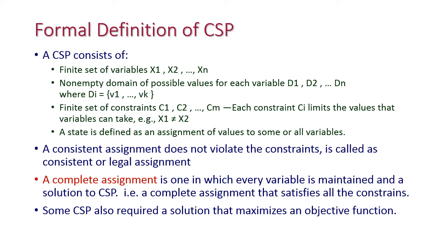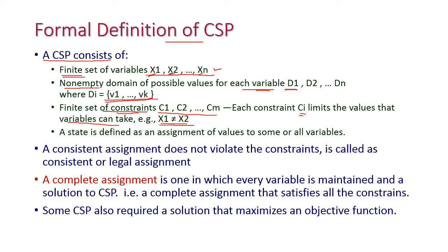The formal definition of CSP: a CSP consists of a finite set of variables X1, X2, up to Xn. Second, a non-empty domain of possible values for each variable — each domain consists of a set of values V1, V2, up to Vk. Third, a finite set of constraints C1 to Cm, where each constraint Cn limits the values that the variable can take. For example, X1 should not equal X2.